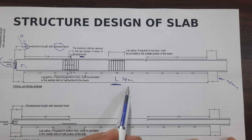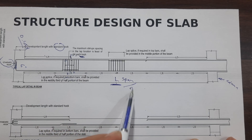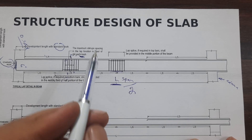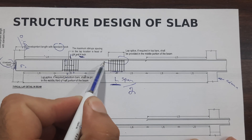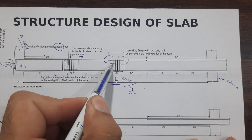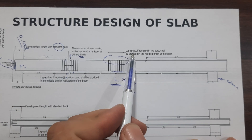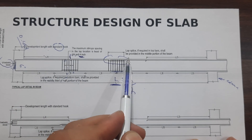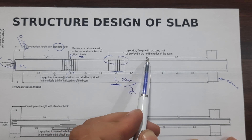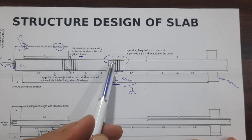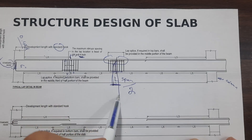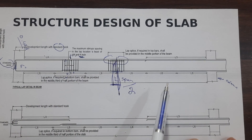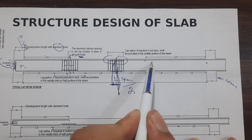Next, if lapping length is required, do not provide the lapping at the middle — L/2, or span divided by 2 — for the bottom bars. But you can provide it in the compression zone. Lap or splice, if required, for top bars shall be provided at the middle portion of the beam — which is L/2.